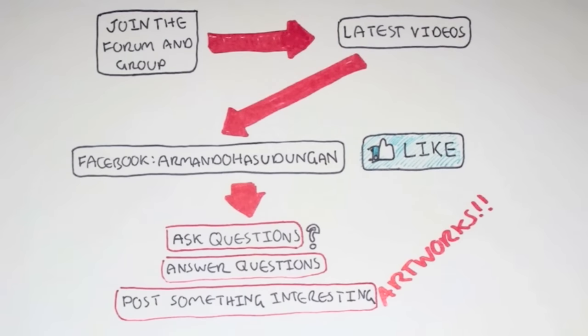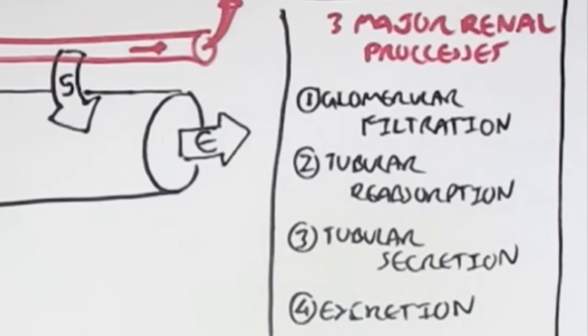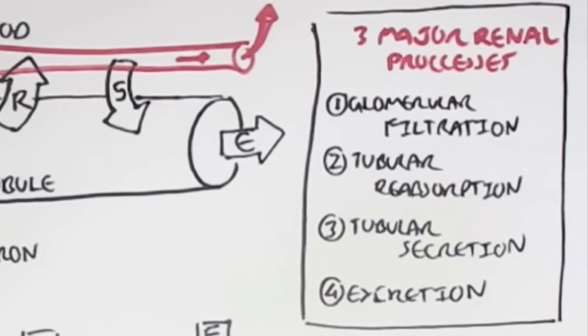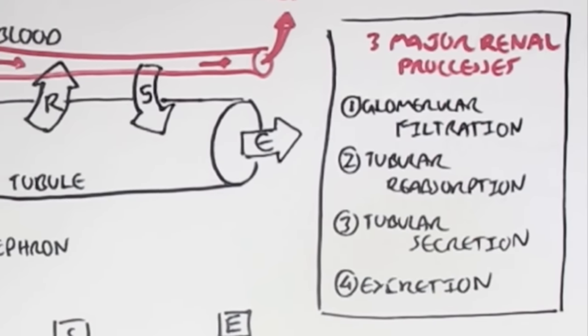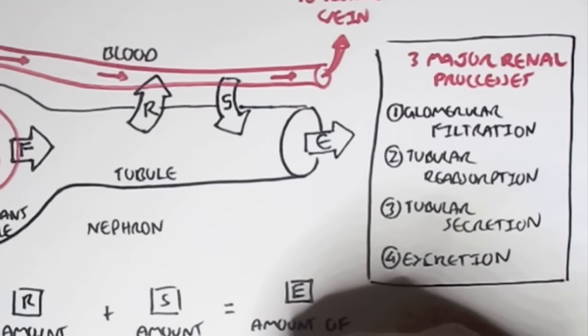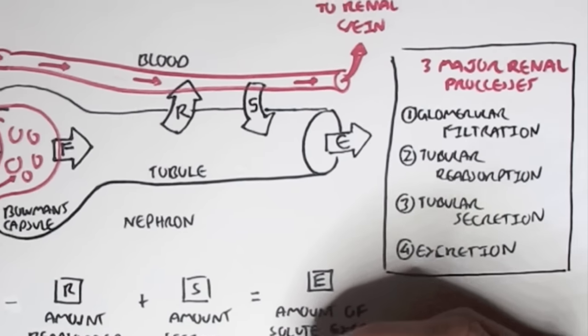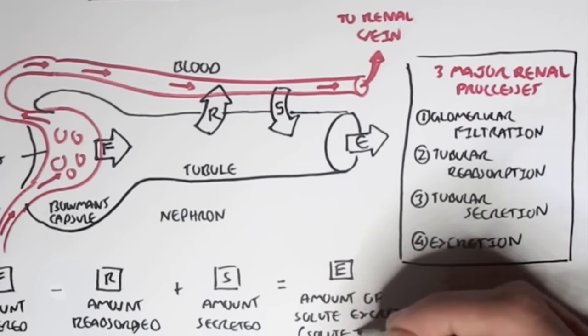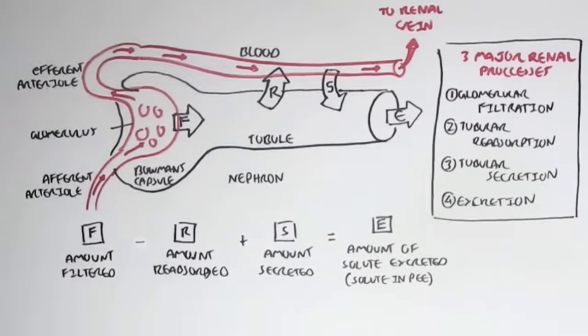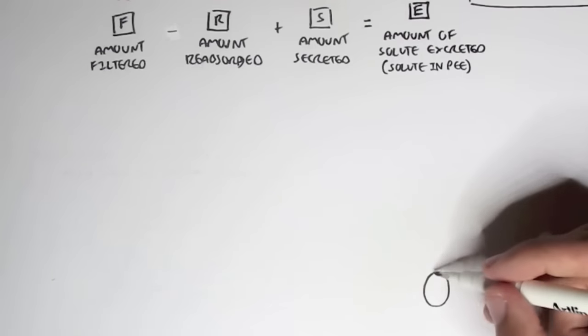In this video we're going to continue on from where we last left off — urine production. Remember that there are three major renal processes: filtration, reabsorption, secretion, and the fourth one we can say is excretion.